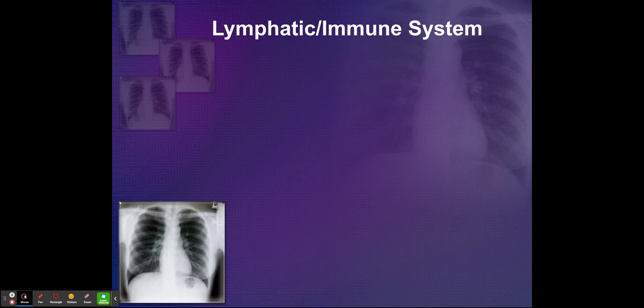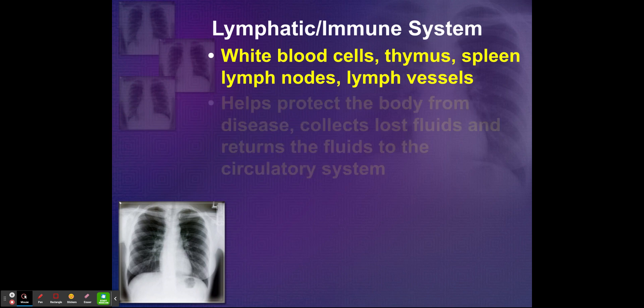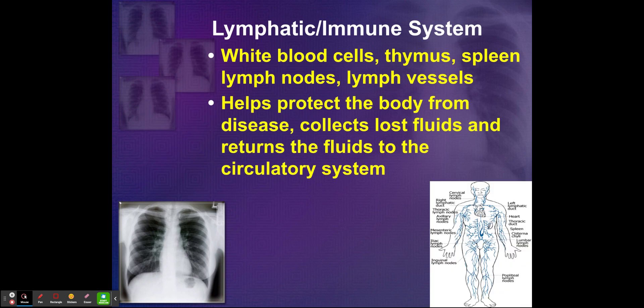And then you have your lymphatic system, also known as your immune system, which includes your white blood cells, thymus, spleen, lymph nodes, and lymph vessels. It helps protect the body from disease, collects lost fluids, and returns those fluids to the circulatory system.